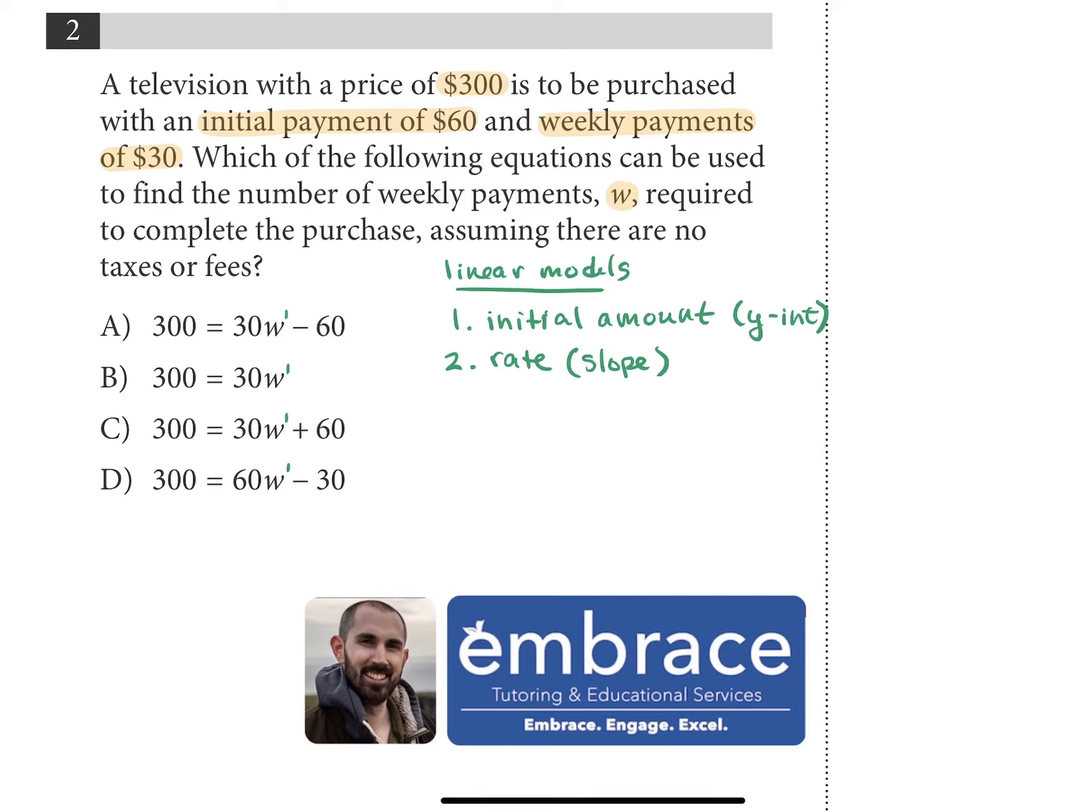Now, if we look back at our problem, the only reoccurring amount, which is the rate in this case, is the weekly payments of $30. So that's going to be our rate, 30. So if we look at our answer choices, we can already eliminate answer choice D. Answer choice D has the rate represented as 60, and that's not true.